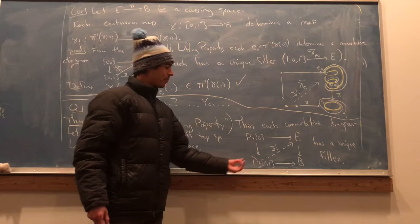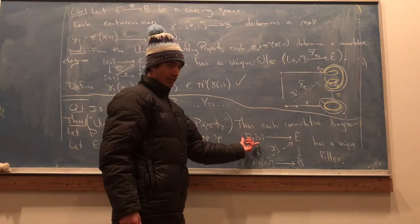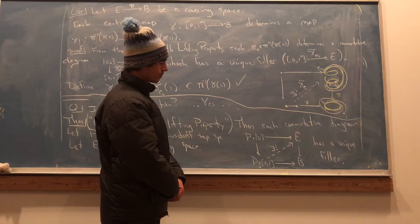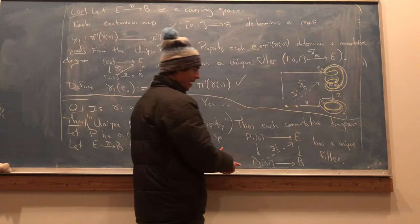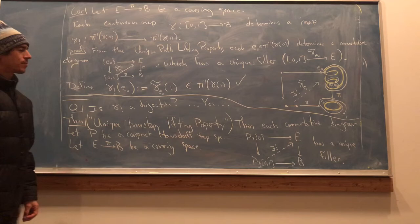When capital P is the interval itself, let's think about what that means. Capital P is the interval. This is the interval crossed with a point. In other words, just the interval. And the top is a path in E. The bottom is a square mapping to B, which I can think of as a path of paths in B. So this says if you're given a path of paths in B and a lift of the starting path to E, can you lift that path of paths to E? The answer is yes, and it's unique.